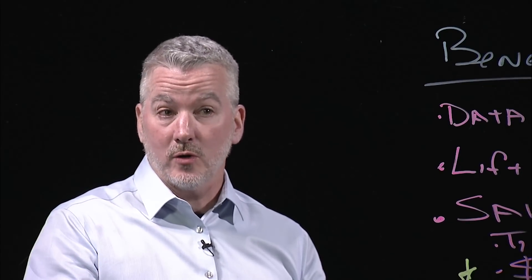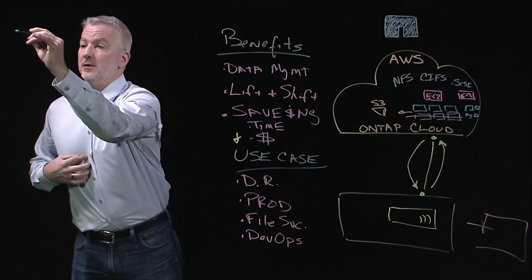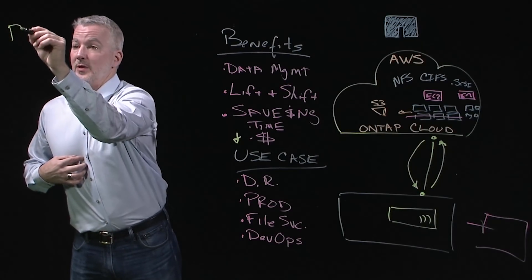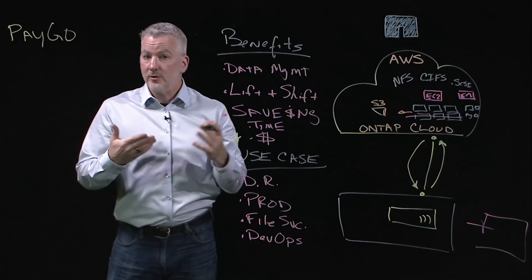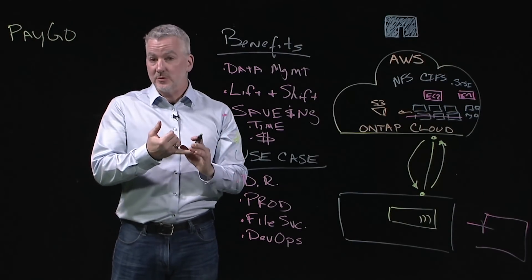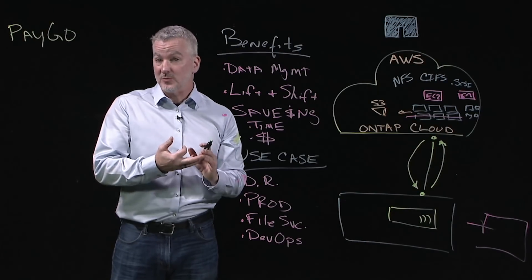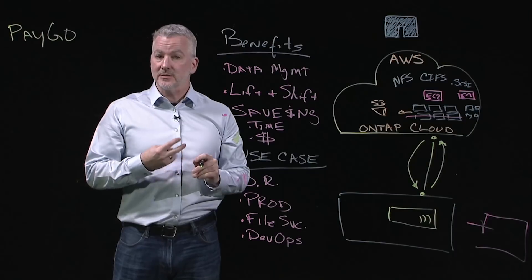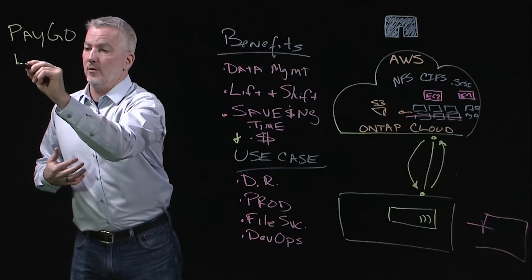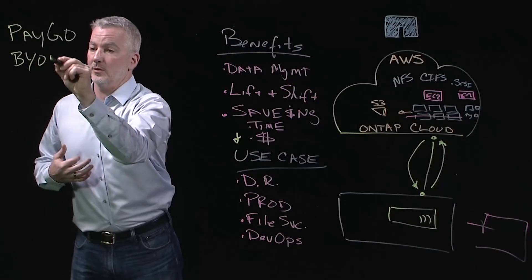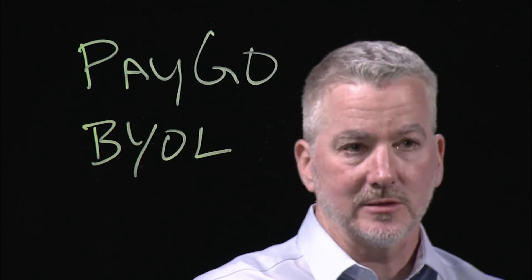If you're interested and want to try out ONTAP Cloud, there are two consumption models. One is a marketplace consumption model with pay-as-you-go — you go to the AWS Marketplace, subscribe to ONTAP Cloud, and select either an hourly or annual consumption model. The other is a subscription model where you work with a NetApp rep or partner, or bring your own license, to acquire and apply a license for your ONTAP Cloud system.